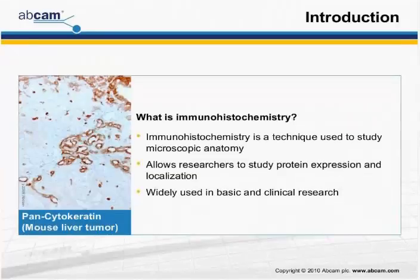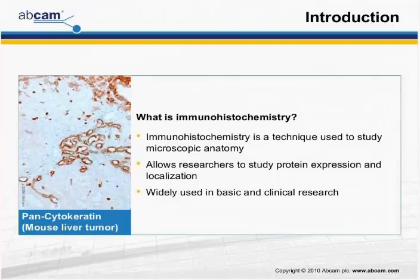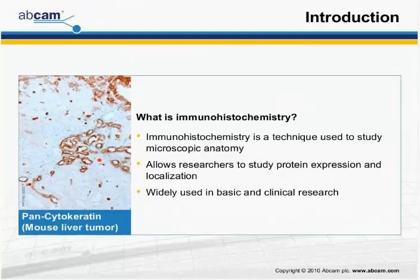What is immunohistochemistry? Immunohistochemistry is a technique used to study microscopic anatomy. Tissues are sliced into very thin sections and then mounted to a slide; they can then be observed under the microscope. Here we're looking on the left at a mouse liver tumor with pancytokeratin staining in brown. You can easily see this very distinct stain, localized to the area of protein expression.